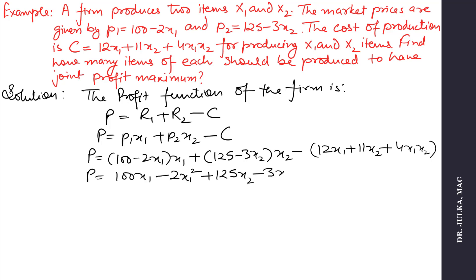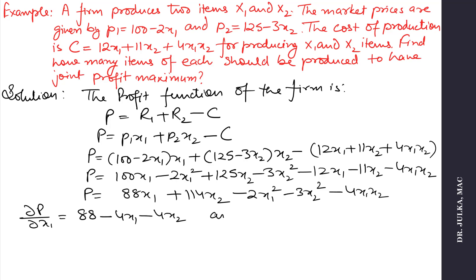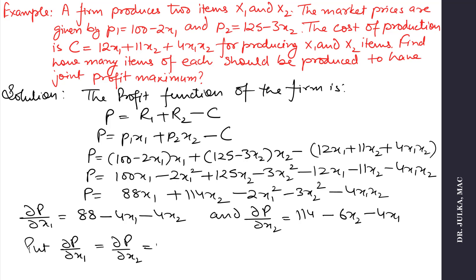After simplification, we get profit equals 88x1 plus 114x2 minus 2x1² minus 3x2² minus 4x1x2. The partial derivative with respect to x1 is 88 minus 4x1 minus 4x2, and the partial derivative with respect to x2 is 114 minus 6x2 minus 4x1. We set both partial derivatives equal to zero to find the critical point.